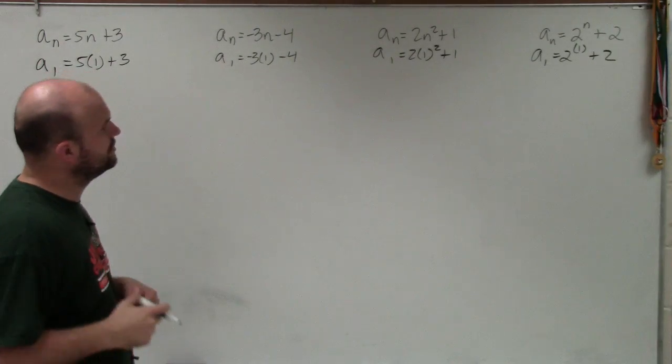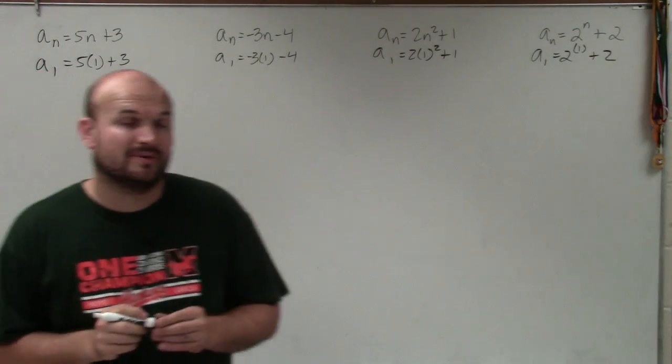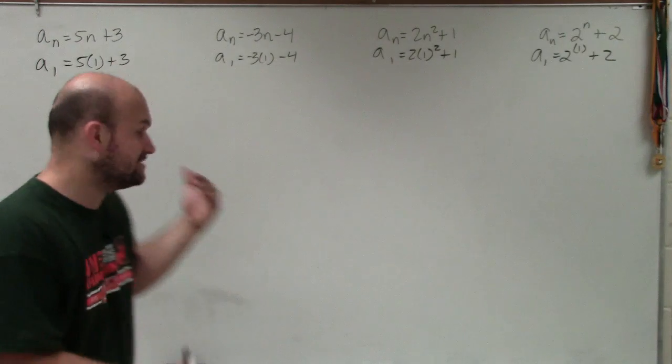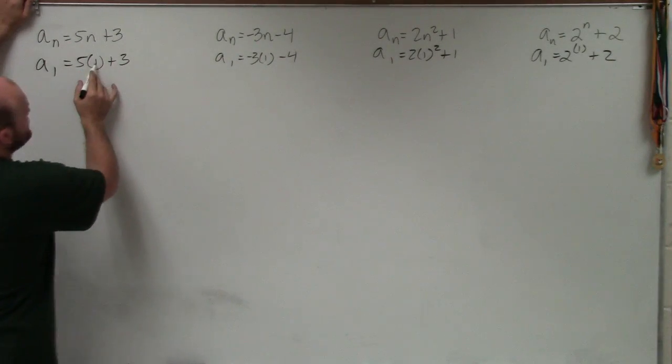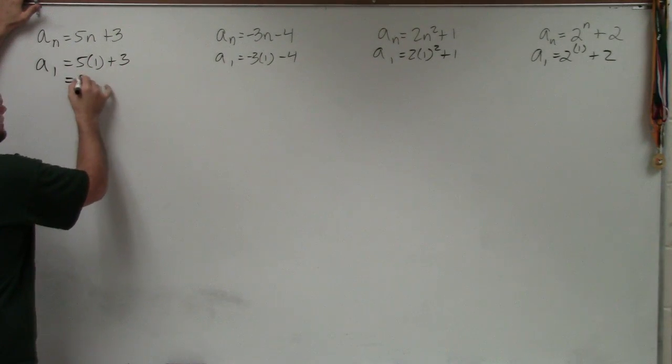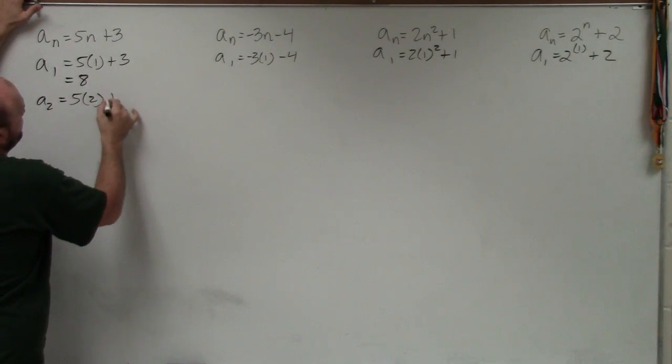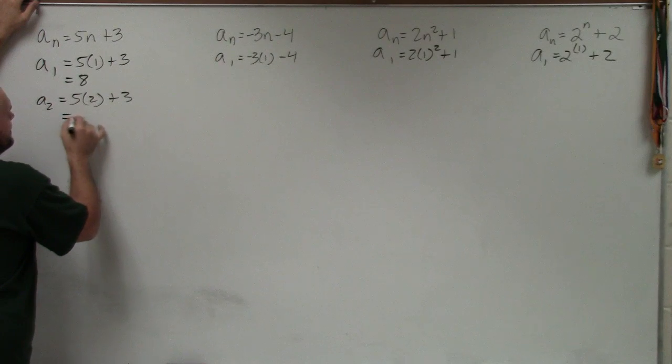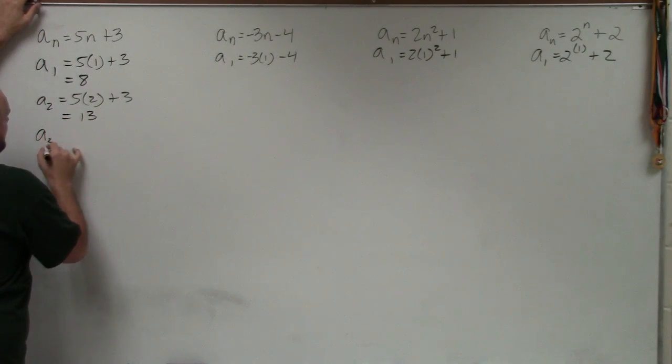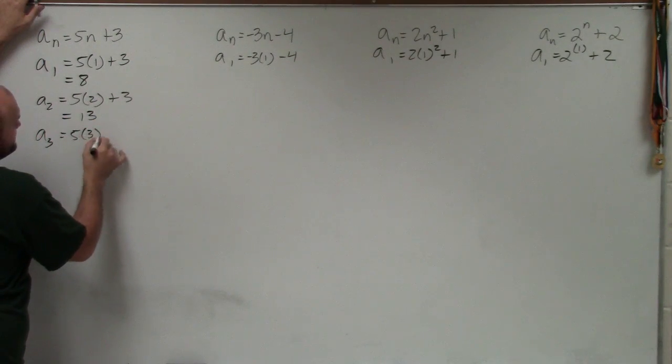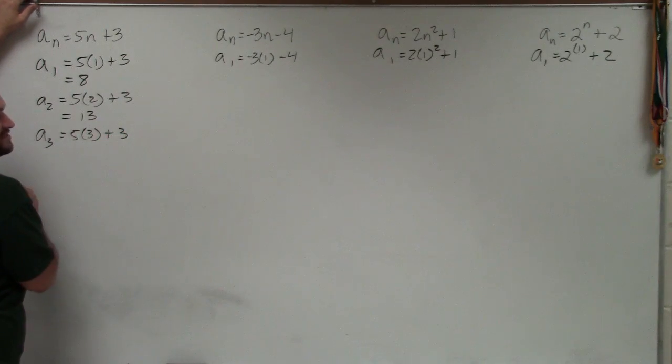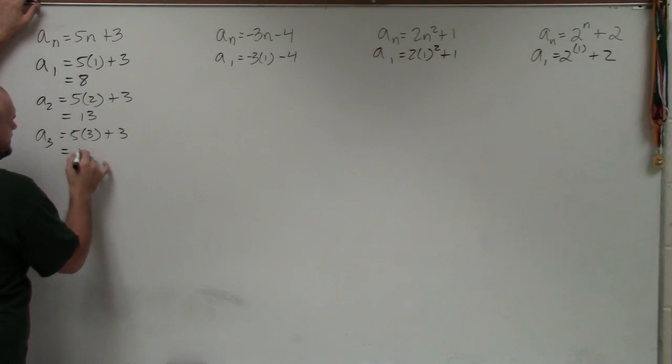And then all you simply do is simplify. Now, again, I'm going to kind of speed this video up a little bit. I'm going to do a lot of the work in my head, but I will say it out loud. 5 times 1 is 5 plus 3 is 8. So now I'll do a sub 2. I'm going to do 5 times 2 plus 3. 5 times 2 is 10 plus 3 is 13. A sub 3 is going to be 5 times 3 plus 3. 5 times 3 is 15 plus 3 is 18.